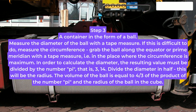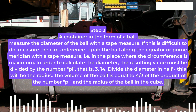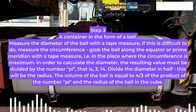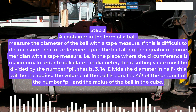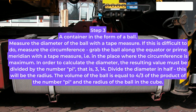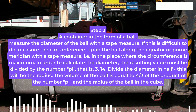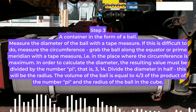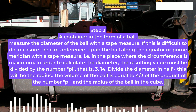Step 3. A container in the form of a ball. Measure the diameter of the ball with a tape measure. If this is difficult to do, measure the circumference — grab the ball along the equator or prime meridian with a tape measure, i.e. in the place where the circumference is maximum. To calculate the diameter, divide the resulting value by pi, that is, 3.14. Divide the diameter in half — this will be the radius. The volume of the ball is equal to four-thirds of the product of pi and the radius of the ball cubed.